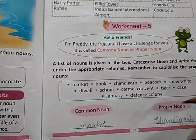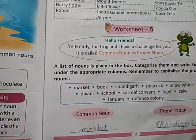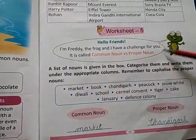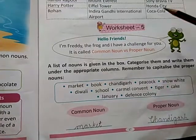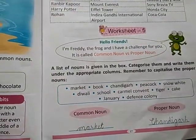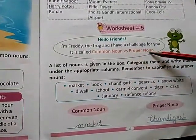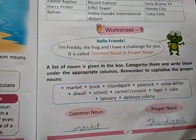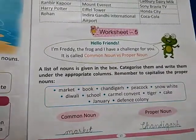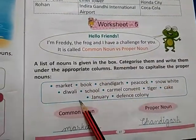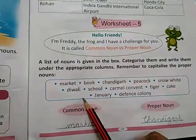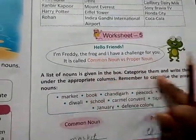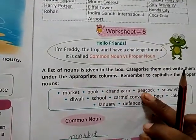Worksheet 5. I am Freddy — hello friends, I am Freddy the frog. And I have a challenge for you — ek challenge hai aapke liye. It is called common noun versus proper noun. A list of nouns is given in the box. Yahan yeh jo boxes mein aapko nouns ke name diye gaye hai — in mein do type hain, common or proper.